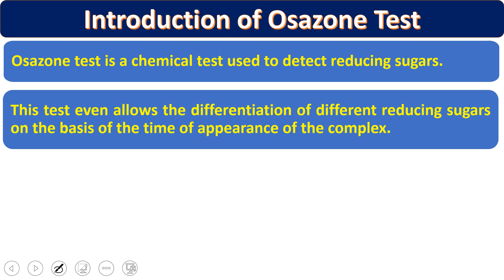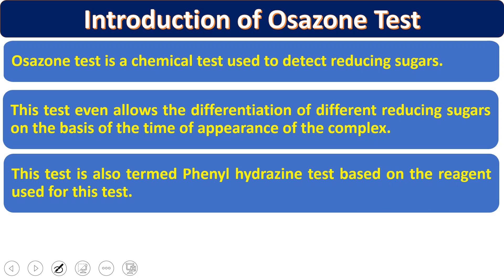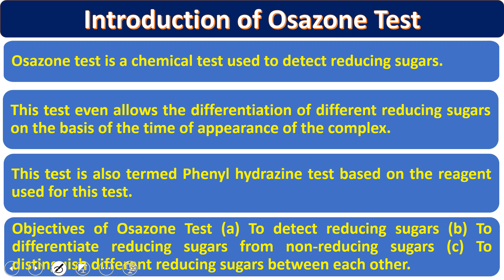This test allows differentiation of different reducing sugars on the basis of time of appearance of the complex and crystal shape. For different reducing sugars — glucose, fructose, galactose, mannose, lactose — osazone crystals form at different time spans with different shapes. Based on these two parameters we can identify which type of sugar is present. This test is also termed the phenylhydrazine test because phenylhydrazine is the main reagent involved in the reactions.